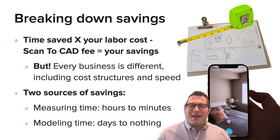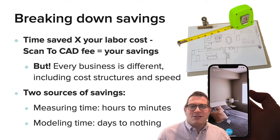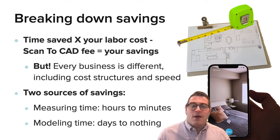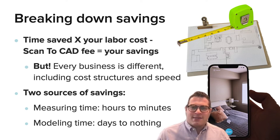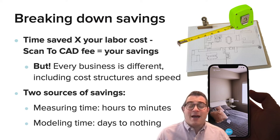Canvas helps you save time in two key areas. One is on measuring. Our customers tell us that they typically spend between four and eight hours measuring their client's home. Canvas takes those hours of measuring and reduces it to minutes of scanning — it takes around 30 to 60 seconds to scan your average room, about 20 to 30 minutes to scan your average home. So you can already see the time savings there.